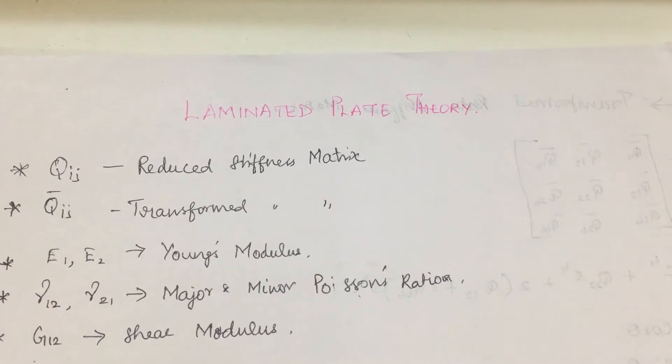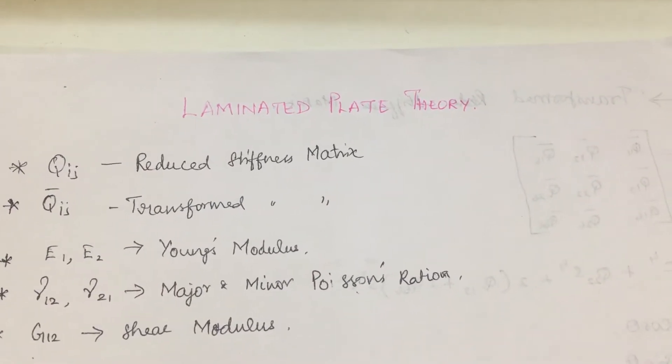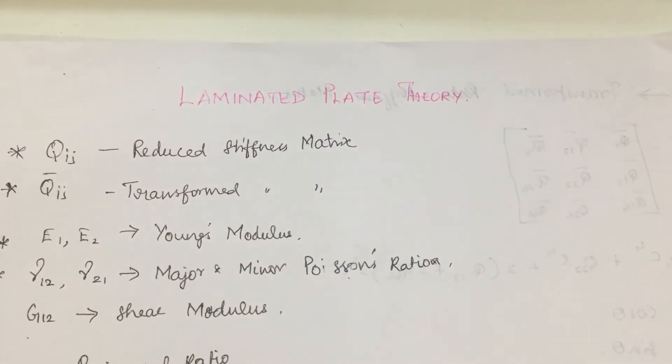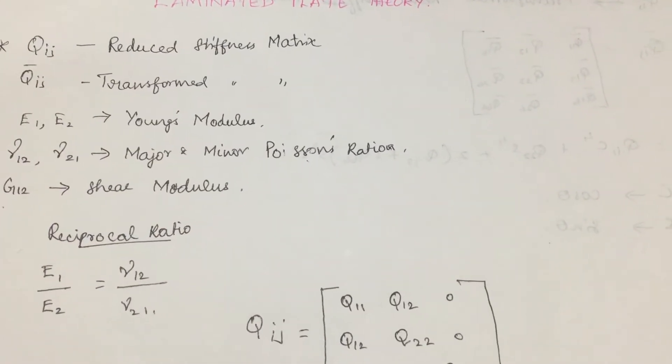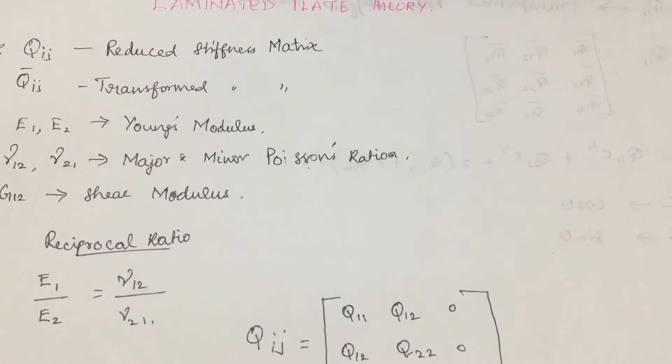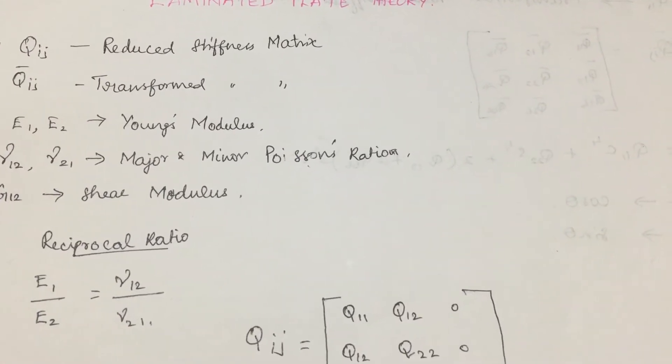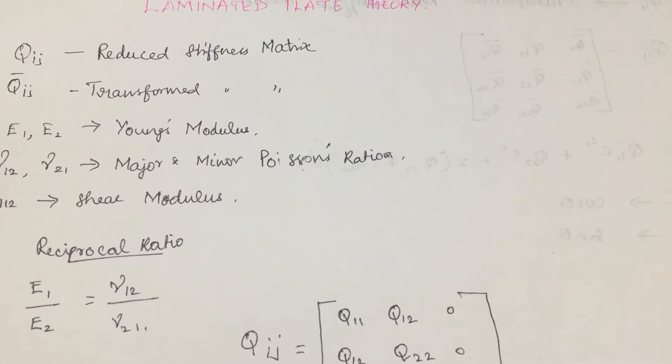We already know the reciprocal ratio with which we will be able to find mu12 and mu21 in problems. E1 by E2 is equal to mu12 divided by mu21.